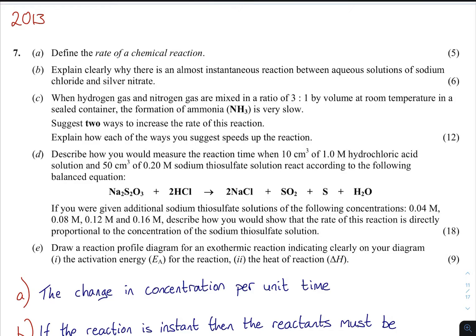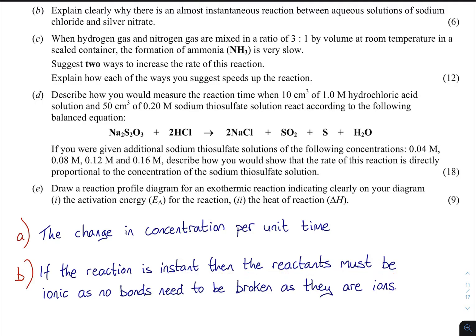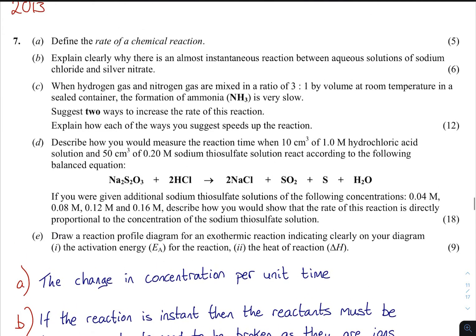Today we want to look at the remainder of the questions that could be asked and you will see pretty much all of them are repeated. Starting off around 2013. First off, define the rate of reaction. Again we're seeing the same questions appear - it is the change in concentration per unit time. Part B: explain clearly why there is almost an instantaneous reaction between aqueous solutions of sodium chloride and silver nitrate. Whenever there's an instantaneous reaction it means that they must be ionic.